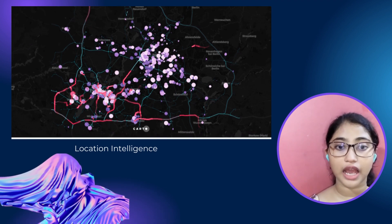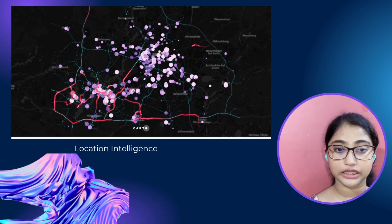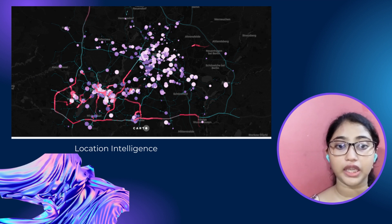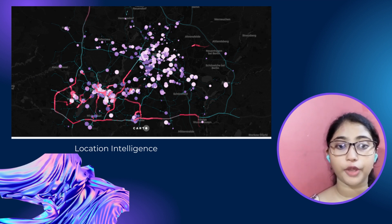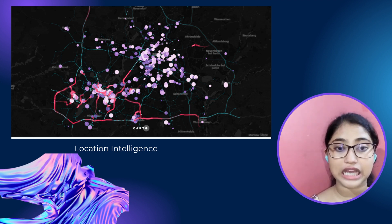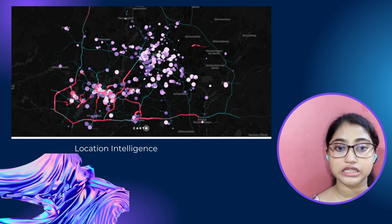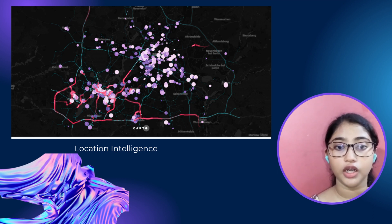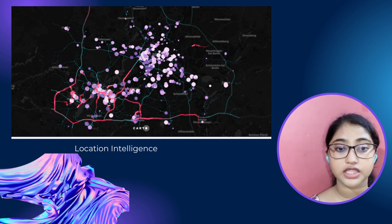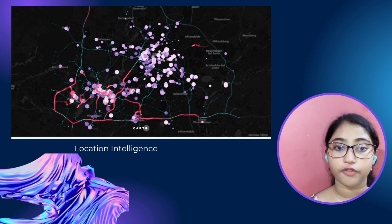Location intelligence: GIS can be used to analyze and visualize spatial data to gain insights and to make proper decisions. Location intelligence can be used for various purposes such as market analysis, customer segmentation, site selection, risk analysis as well as optimization. GIS is used by Uber to provide location intelligence to its drivers and riders, such as optimal route, surge pricing and demand forecasting.